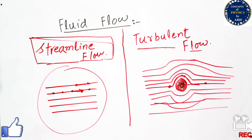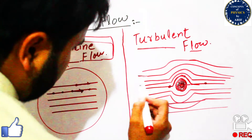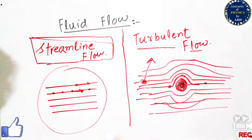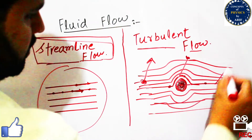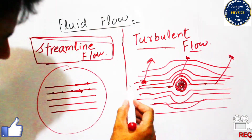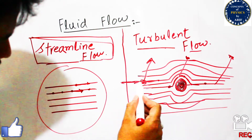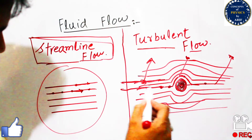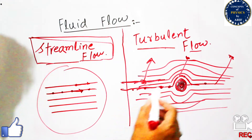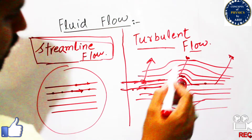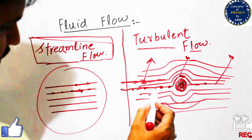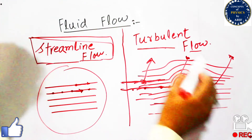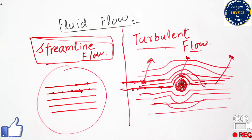From this diagram you can also see that at this point it is streamline flow, at this point it is turbulent flow, and again at this point it is streamline flow — because every particle moving here is following the path of the previous particle. In the turbulent zone, every particle is not following the path of the previous particle; a particle coming from one direction moves in a different direction.